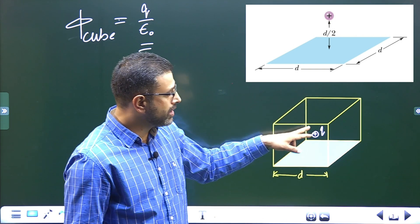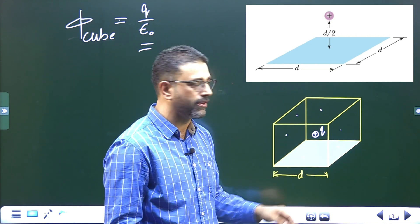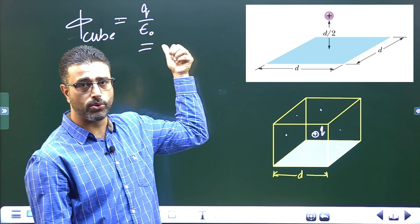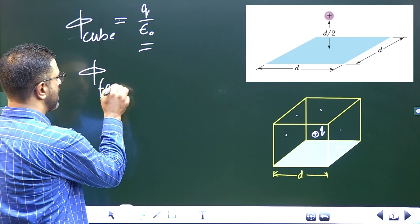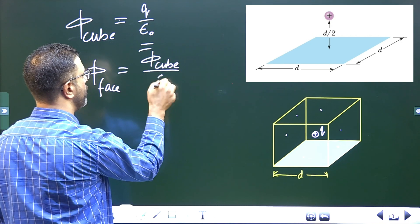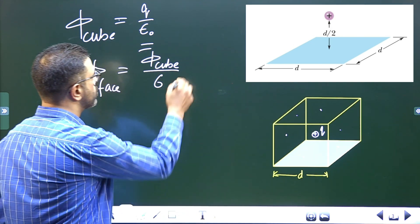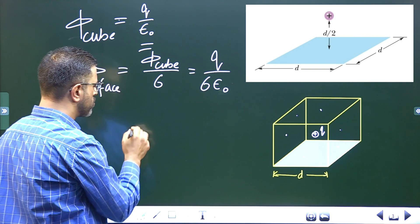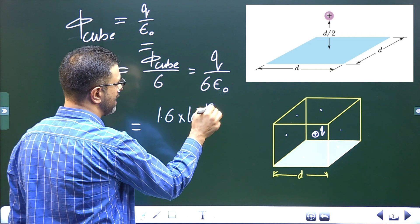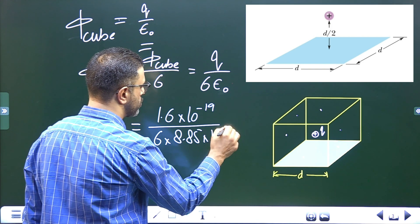Since the charge is at the center of the cube, flux will be shared equally by the six faces. That means flux through each face will be one sixth of the total flux through the cube. So flux through each face is the flux through the cube divided by six, which equals Q divided by six epsilon zero. Substituting values: Q is the proton charge, 1.6 × 10⁻¹⁹ Coulombs, divided by 6 times epsilon zero, which is 8.85 × 10⁻¹² in SI units.